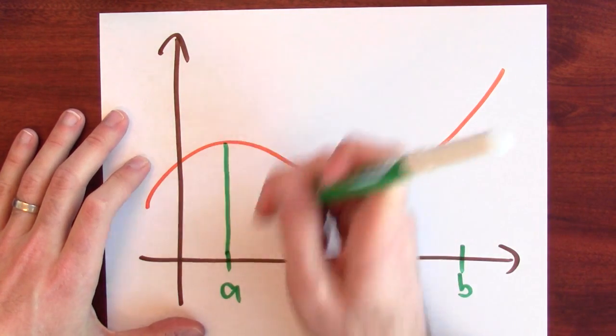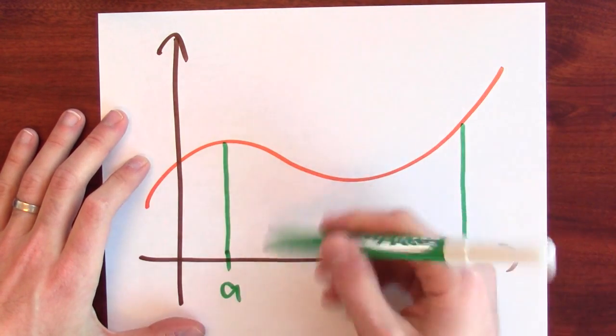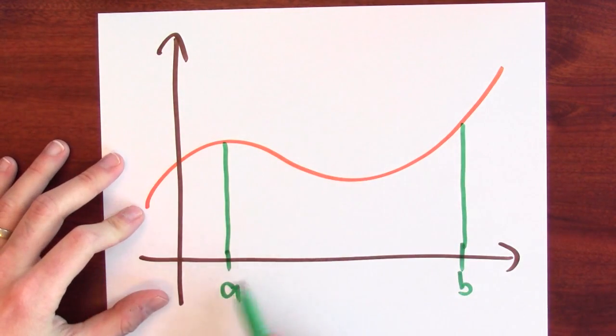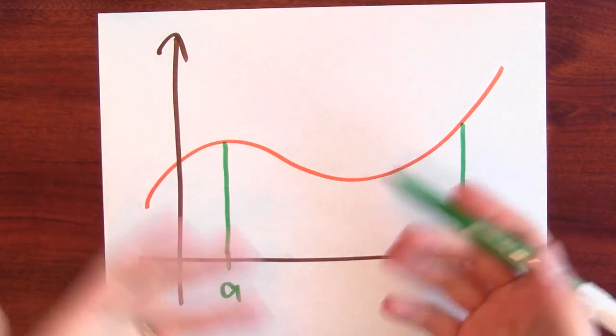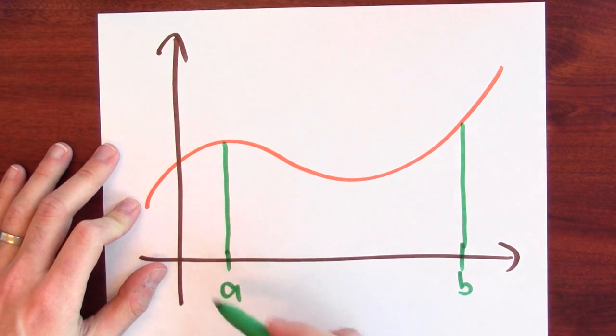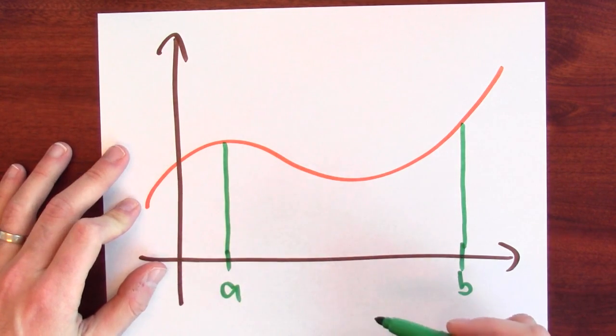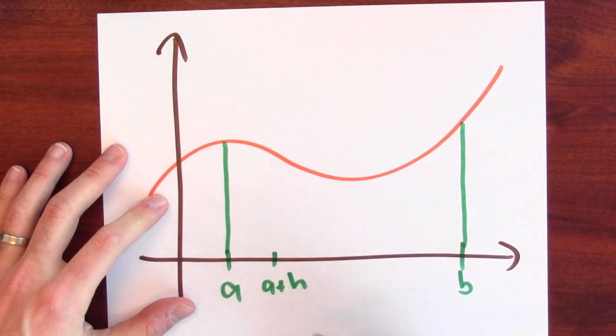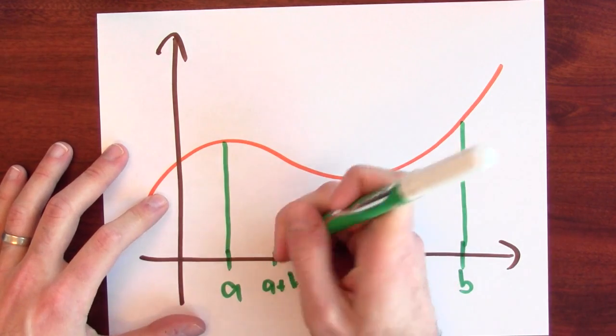And the integral from a to b calculates the area in here. And I want to know, how does that integral change when I wiggle a? I'm asking to differentiate the integral with respect to this left-hand endpoint. So let's wiggle the left-hand endpoint. Let's move it over a bit to a plus h. I'm imagining h is very small.